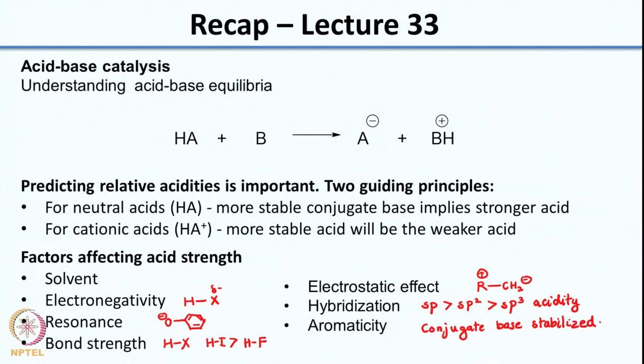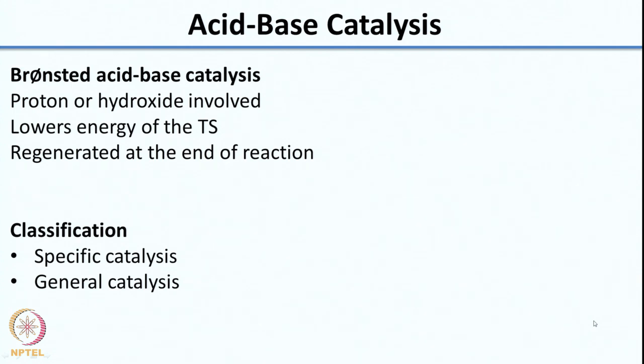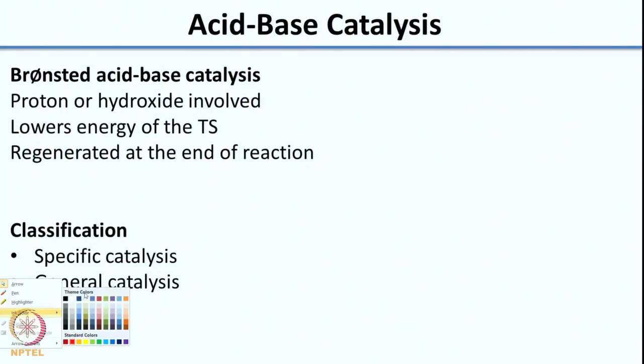So we had looked at all of these factors in the previous class. Now what we look at is catalysis by acids and bases. We would be looking mainly at Bronsted acid-base catalysis. Bronsted acid-base catalysis means you have a proton or a hydroxide - proton generally in the form of H3O+ or the protonated solvent you are working with. What happens is the proton or hydroxide, due to interaction with the reactant, lowers the energy of the transition state for the reaction, and thereby you have an accelerated reaction. It acts as a catalyst, and at the end of the reaction your proton or hydroxide is regenerated.